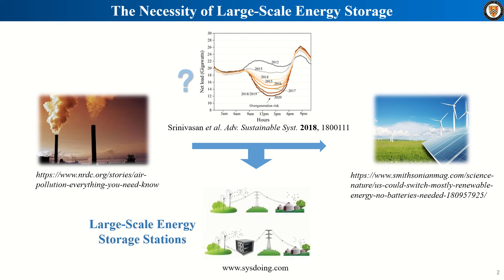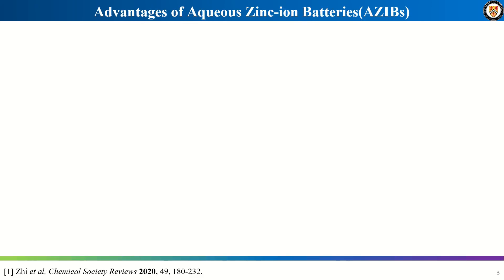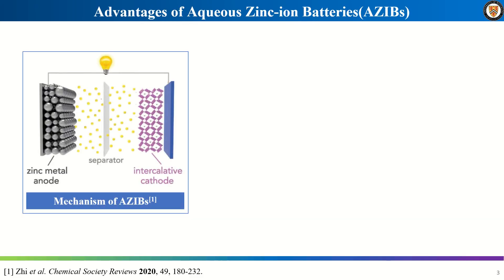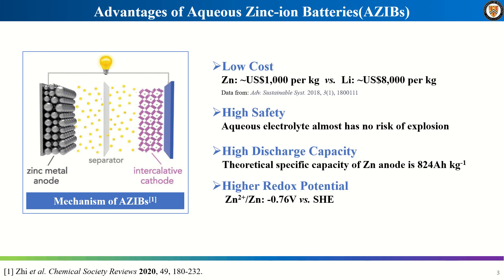Well, one of the answers is to build large-scale energy storage stations. As one of multivalent ion batteries, aqueous zinc ion batteries attract research attention due to their low cost, high safety, and high discharge capacity, and a higher redox potential makes it more suitable to work in aqueous electrolytes. These properties make aqueous zinc ion batteries a superior candidate for large-scale energy storage stations.